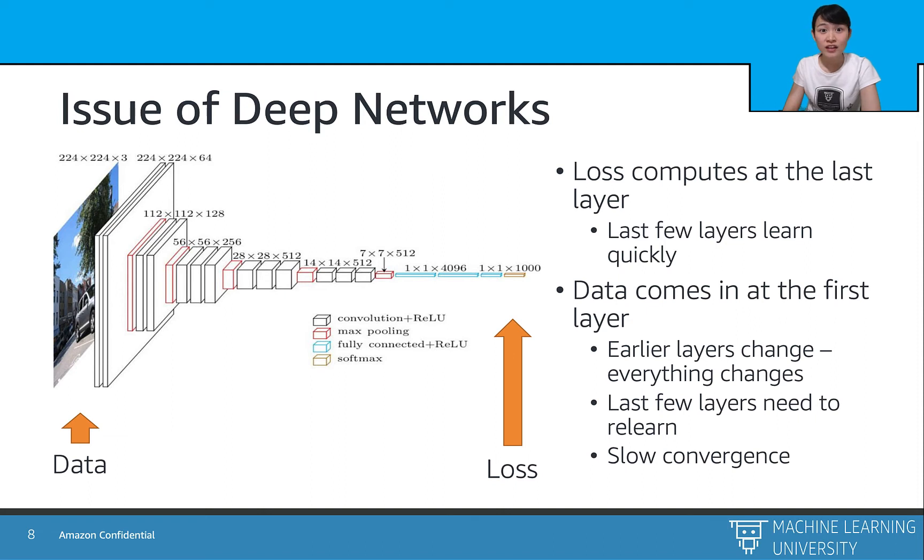So during the training, once the last layer changes, everything afterwards is also changed. So that means the last layer needs to re-learn the parameters to suit the change of the input.